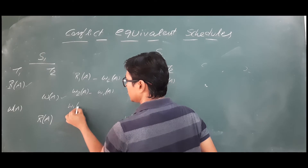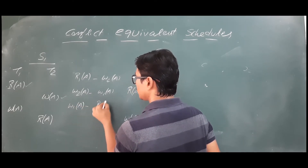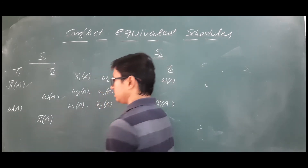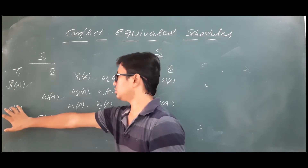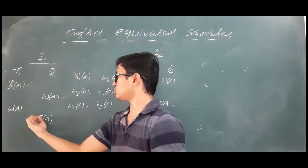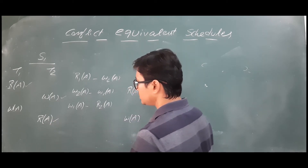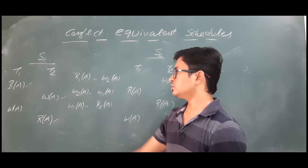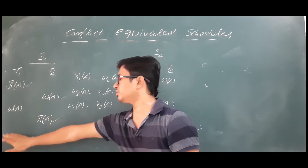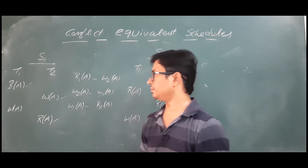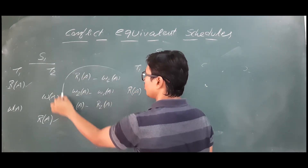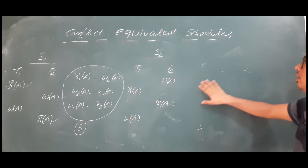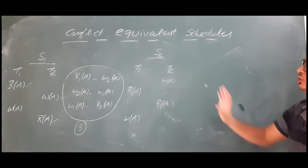The next operation I have to perform is Write A from transaction T1. Write A and Read A — that is another conflict operation. The conflict operation is W1(A) to R2(A), a write from transaction T1 and read from transaction T2 on data item A. After this Read A there are no other operations performed in transaction T1, so it is not conflicting with any other operations. So these are the three conflict operations possible in schedule S1.